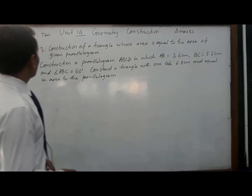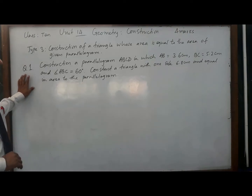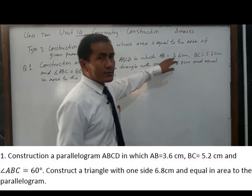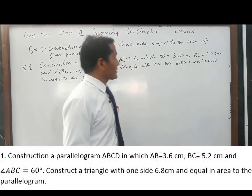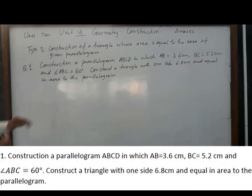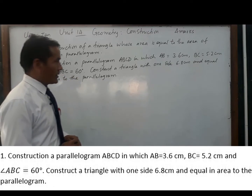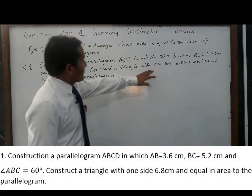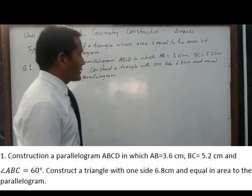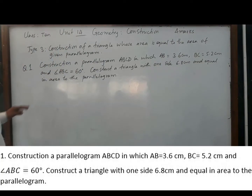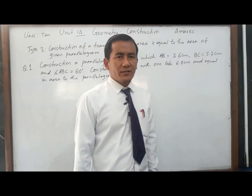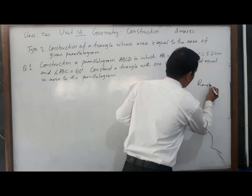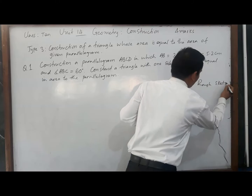Question number one: construct a parallelogram ABCD in which AB equals 3.6 centimeters, BC equals 5.2 centimeters, and angle ABC equals 60 degrees. After constructing the parallelogram, we have to construct a triangle with one side of 6.8 centimeters and area equal to the area of the parallelogram.